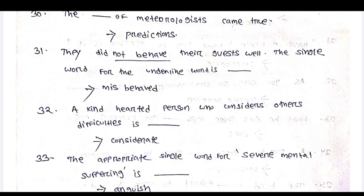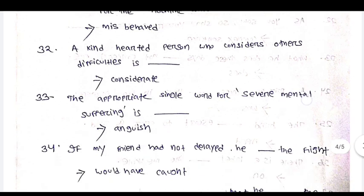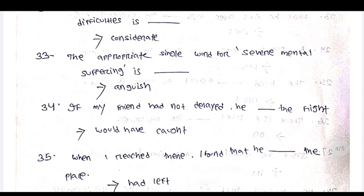They did not behave with their guest well. The single word for the underlined word 'not behave' is misbehave. A kind-hearted person who considers others' difficulties. The appropriate single word for severe mental suffering is anguish.